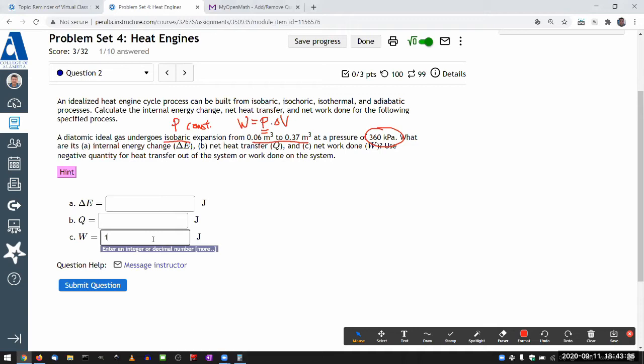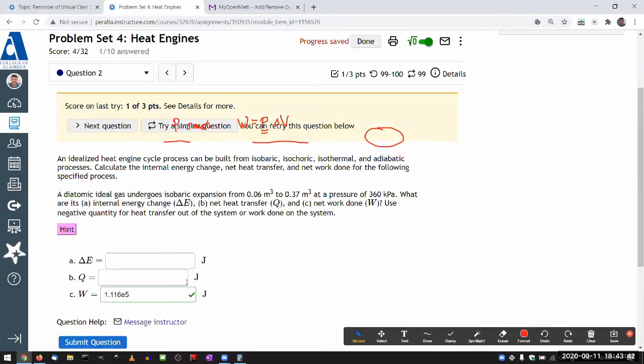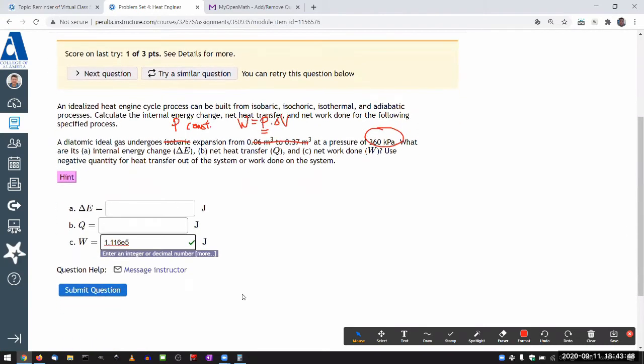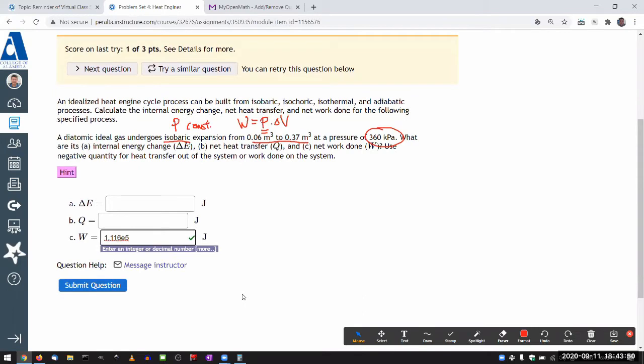That's 111,600 joule. Let me kind of be fancy here. That should be acceptable using the E notation for scientific notation. So good. That's the work done. So that's probably the simplest thing in isobaric expansion.